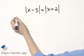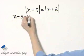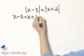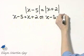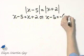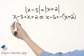For this to be true, either x minus 5 must equal x plus 2, or x minus 5 must equal the opposite of x plus 2. And I have two equations now to solve. All right, let's solve this equation on the left side.